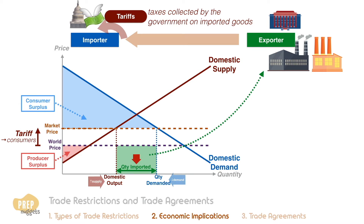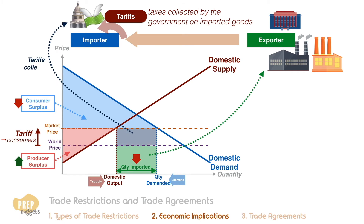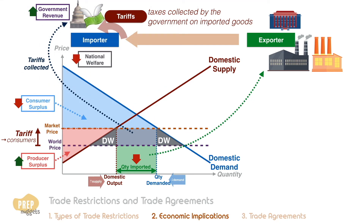The biggest casualty of a tariff is the consumer, as the amount of consumer surplus is greatly reduced. The domestic producers gain as they sell more at a higher price, so producer surplus is increased. The government takes this portion here, which is the amount of tariffs collected, increasing government revenue. However, notice these two empty portions, which are the deadweight loss — this implies that national welfare is reduced.